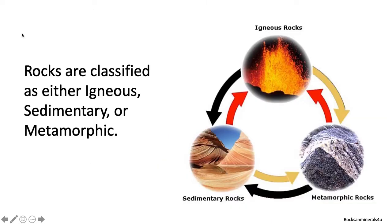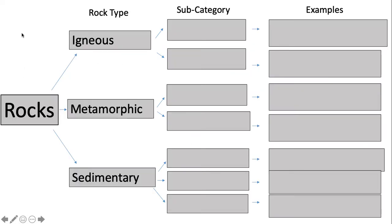Rocks are classified as igneous, sedimentary, or metamorphic, but you need to put them in this order: igneous, metamorphic, and then sedimentary. Your slide should look like this with the first three boxes filled in. Then we're going to do subcategories and examples for each rock type.